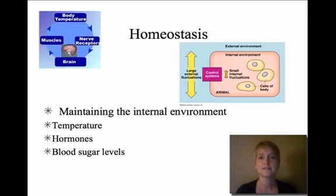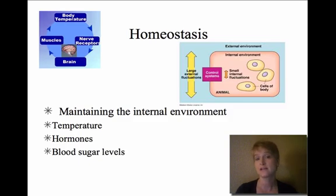The next one is homeostasis. This is a fancy word that means maintaining the internal environment. Cells have control systems and will maintain their internal environment despite very small fluctuations inside the cell. There are also large external fluctuations — say the temperature outside is rather hot, your body is going to respond to that to maintain your internal environment, including hormone levels and blood sugar levels.